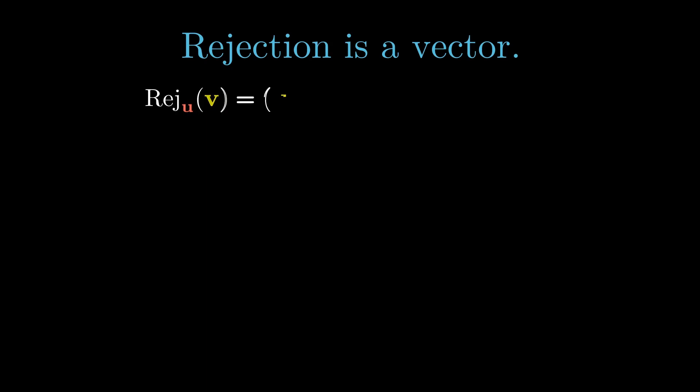Now we'd like to show that our multi-vector expression for the rejection of u from v is a vector, and is, in fact, the vector v minus the projection of v onto u. We expand our bi-vector vector product as a bi-vector vector dot product and a bi-vector vector wedge product. Change the order so that we wedge u with u inverse.